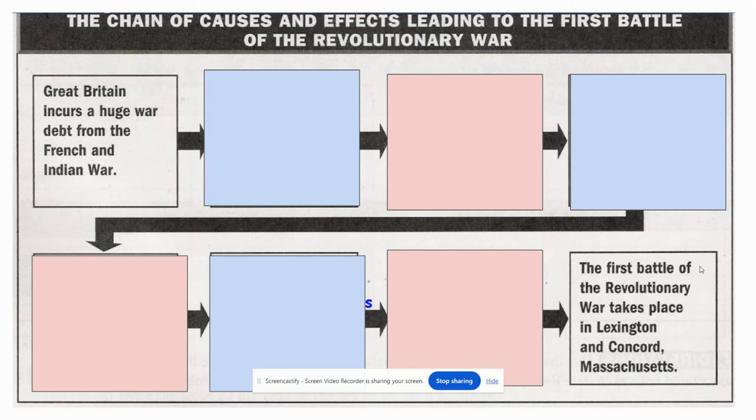Hello government students, this is Mrs. Politski and I have some additional notes for chapter two. We're talking about some of the causes and effects leading to the first battle of the Revolutionary War. What we have in front of you is kind of like a timeline — without all the cumbersome years — but we're going to talk about some of the events that led to this whole Revolutionary War taking place.